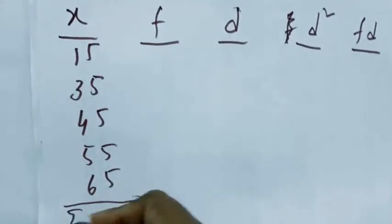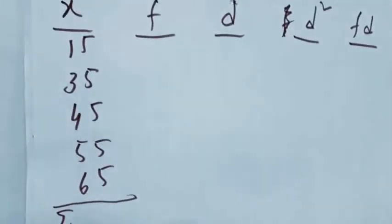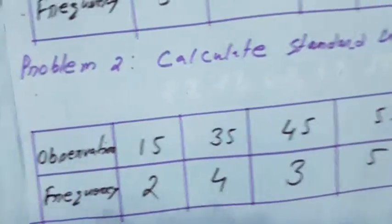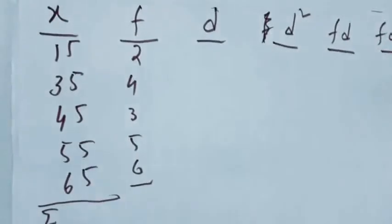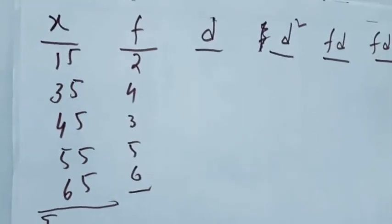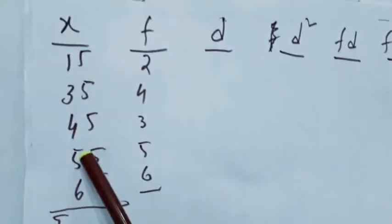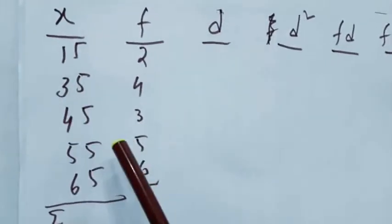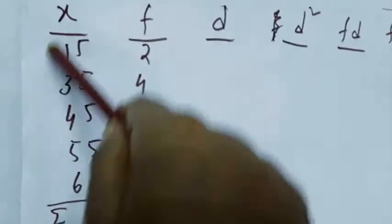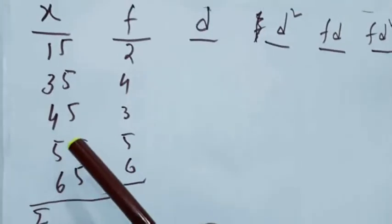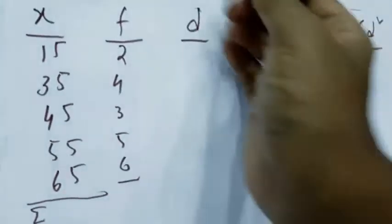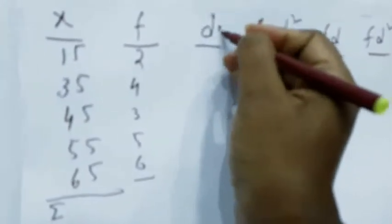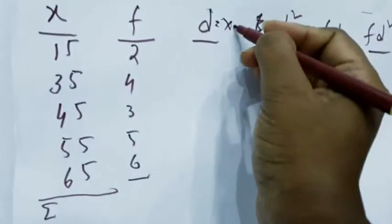The frequencies are 2, 4, 3, 5, 6. Now we have to calculate d. You can take any value from the observations as assumed mean, or you can calculate the actual mean. Suppose I am taking 45 as the middle value of this observation, so d equals x minus 45.